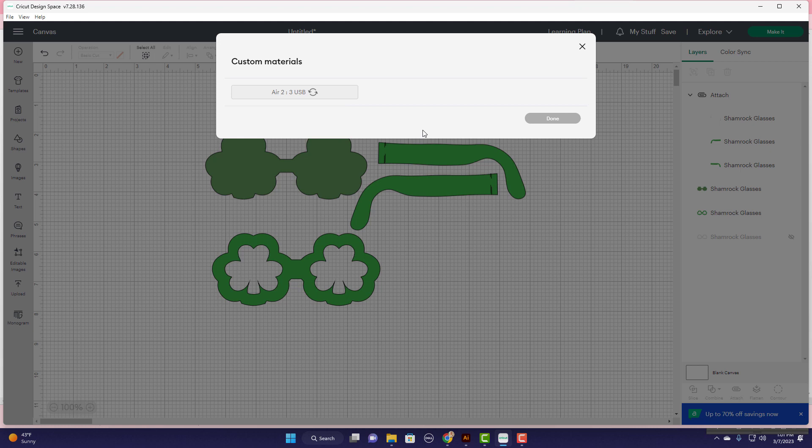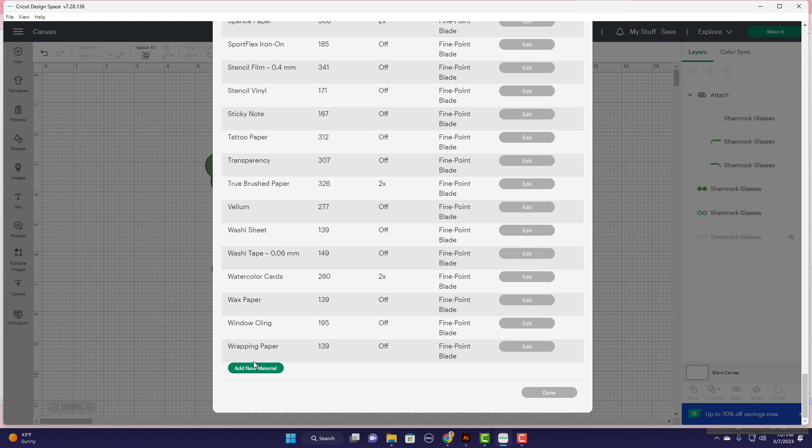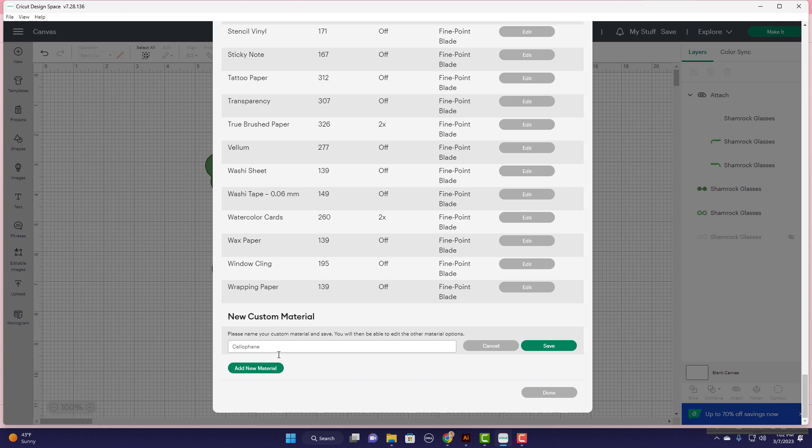And if you've never been in here before it's pretty cool because this tells you the pressure and the passes for all the materials that are set up on the Cricut and what blade type you should use. So we're going to scroll down to the bottom and we're going to add the new material, name it cellophane.